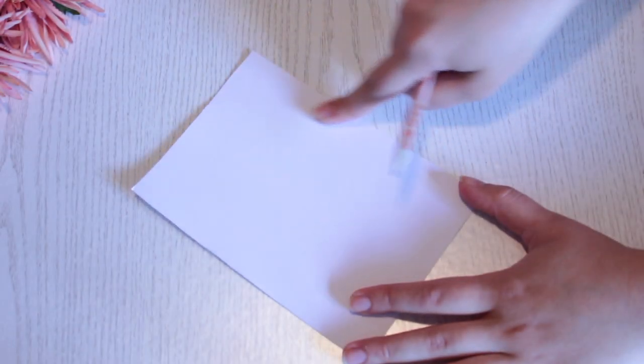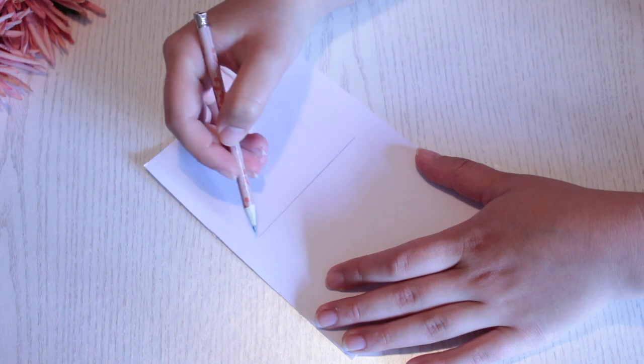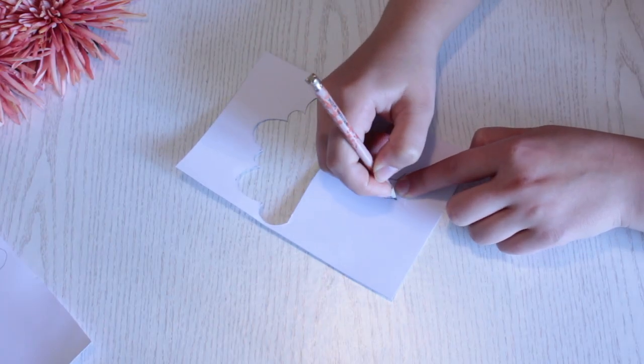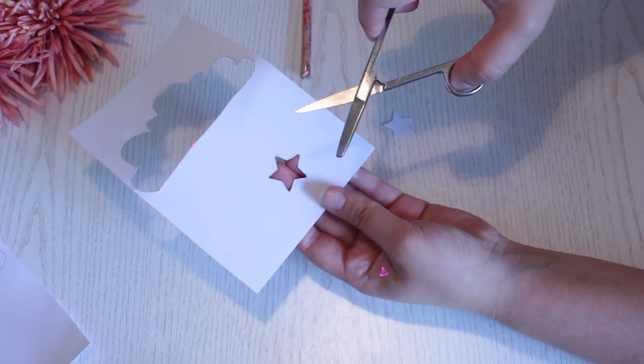Now take the front piece and start drawing a cloud and then cut it out. Then draw a giant star underneath the cloud and cut it out.